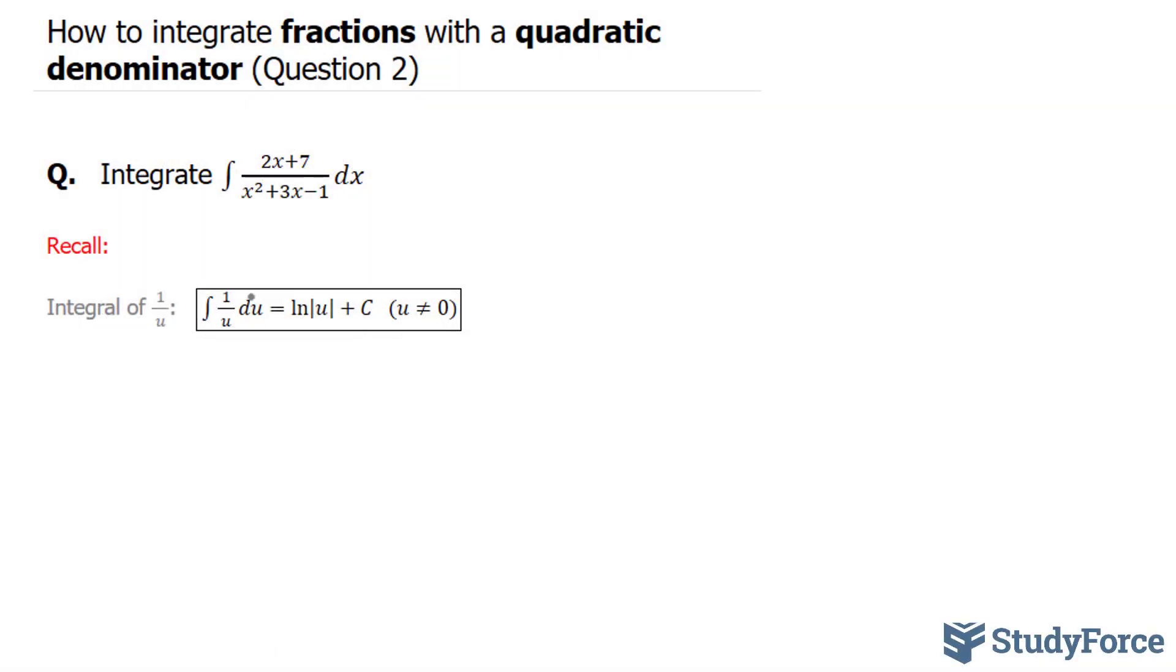In order to integrate this function, we will need to be a little clever with the numbers. We have 2x plus 7, and we can split 2x plus 7 as 2x plus 3 plus 4 over the quadratic x squared plus 3x minus 1.